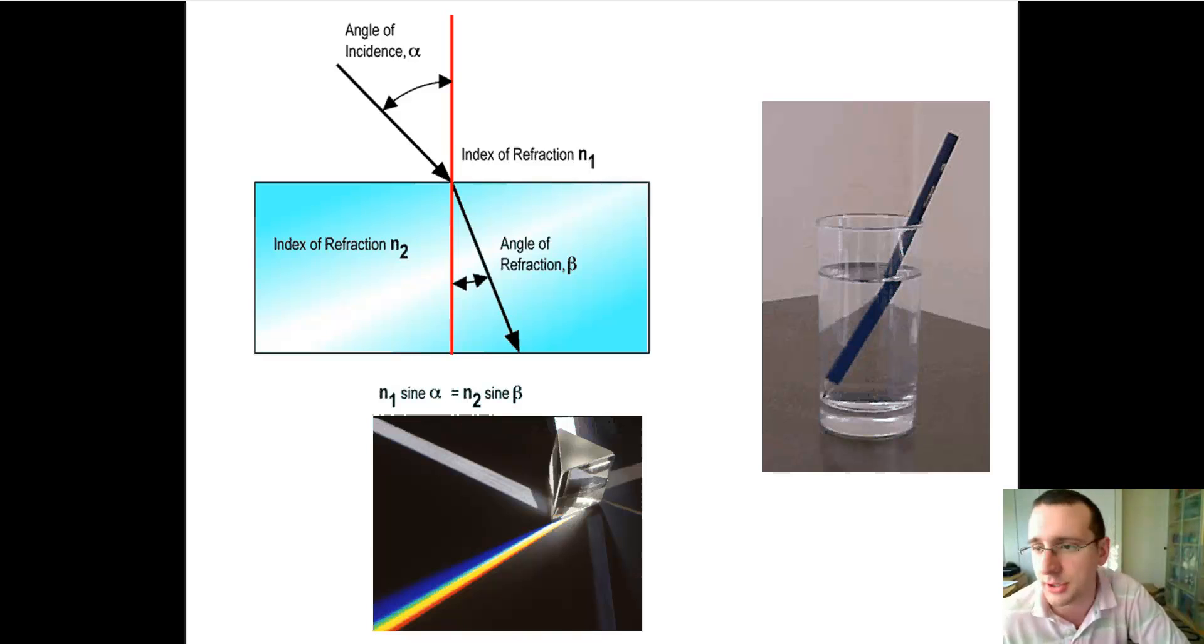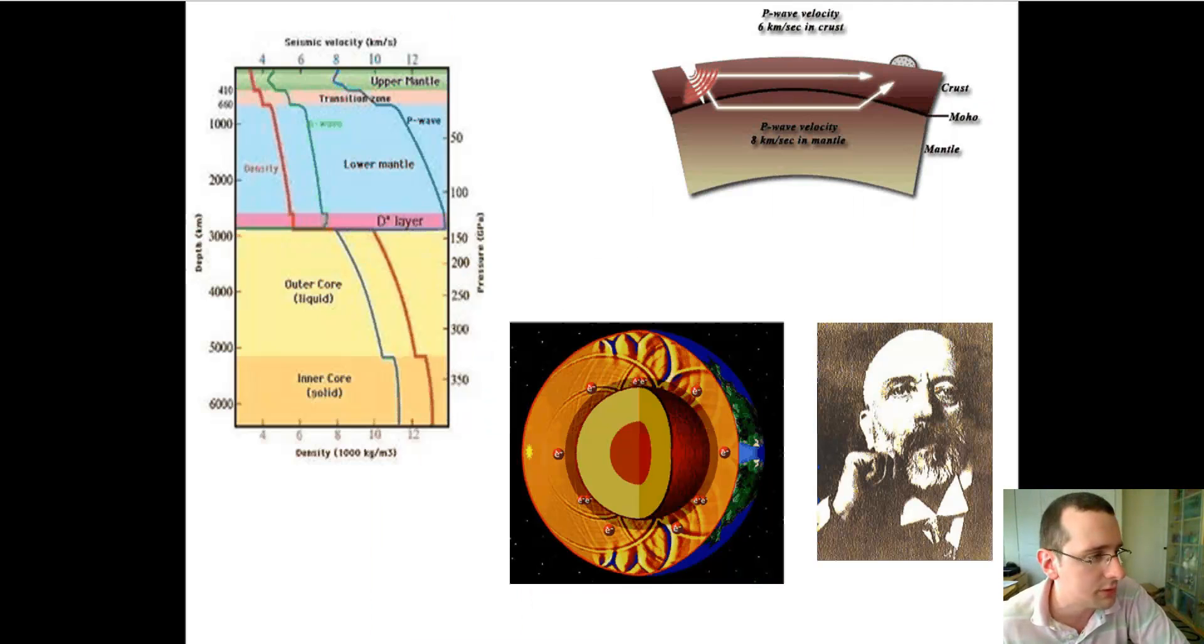Because when seismic waves are generated by earthquakes, those seismic waves travel through the Earth and hit the different layers of the Earth. It will go from the lithosphere to the asthenosphere, and then to the mesosphere, and then to the outer core, and then finally to the inner core. And as the waves travel through those materials of different densities, different composition, some are solid, some are liquid, some are harder, some are softer, some are denser than others, the waves are going to be refracting differently. And so when you suddenly see the wave suddenly change as it goes through the layers, you understand that the wave is changing because the layers are changing.